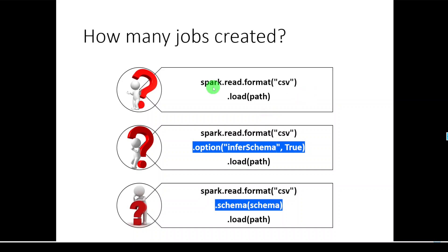In the first approach I am not specifying any option — simply reading spark.read.format.csv then load, giving the path. In the second approach I am specifying the option infer schema true. And in the third approach I am specifying the schema externally — we have defined the schema in the previous step and are supplying it while reading the CSV file.